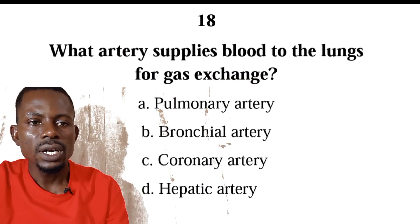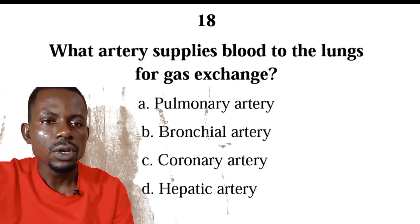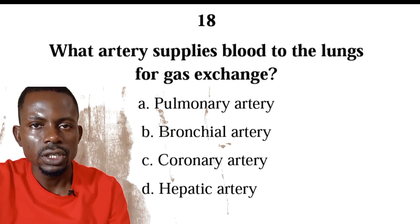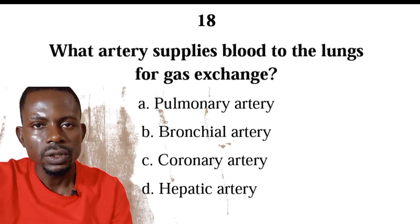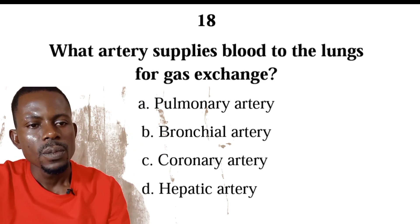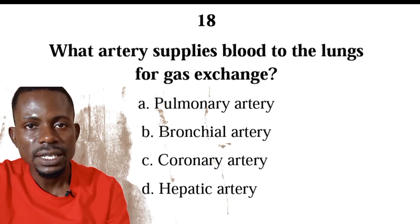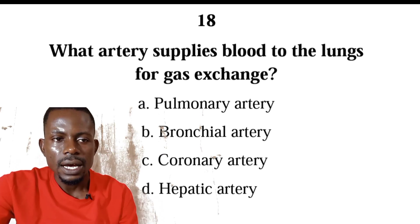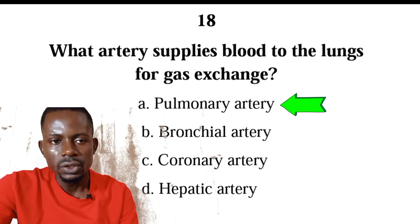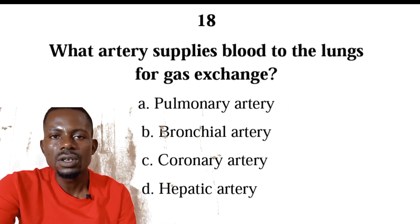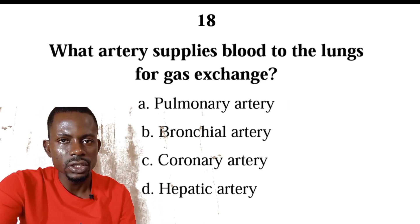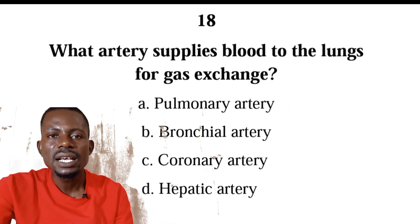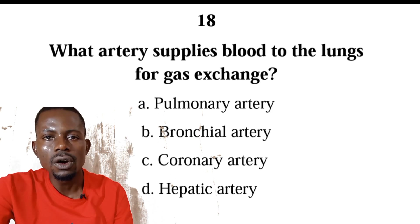Number eighteen: what artery supplies blood to the lungs for gas exchange? The options are pulmonary artery or bronchial artery. The correct answer is A, pulmonary artery. The pulmonary artery supplies blood to the lungs for gas exchange, while the bronchial artery supplies oxygen and nutrients to the lung tissues.